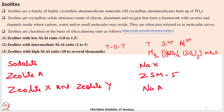Another possible adsorbent for hydrogen storage is zeolites. Zeolites are 3D crystalline aluminosilicate structures built up of TO4-type tetrahedron structures with corner sharing, where T stands for Si4+ or Al3+.